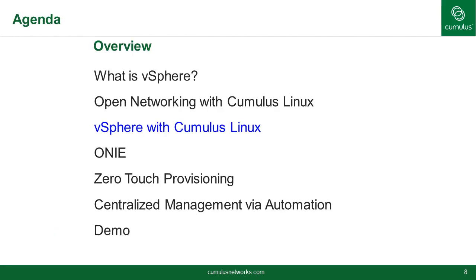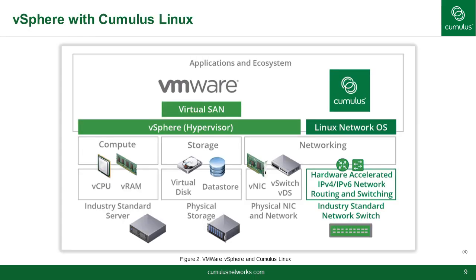So how do we tie both things together? Cumulus Linux and VMware vSphere are software solutions that run on top of bare-metal, industry-standard hardware. This allows customers to build compute, storage, and network platforms from a wide variety of suppliers who often employ highly competitive pricing models. The software defines the performance and behavior of the environment and allows the administrator to exercise version control and programmatic approaches already in use by DevOps teams. You can see in the diagram that VMware, virtual SAN, and the hypervisor are all taken care of, while the underlay is provided by hardware-accelerated IPv4 and IPv6 network routing and switching.